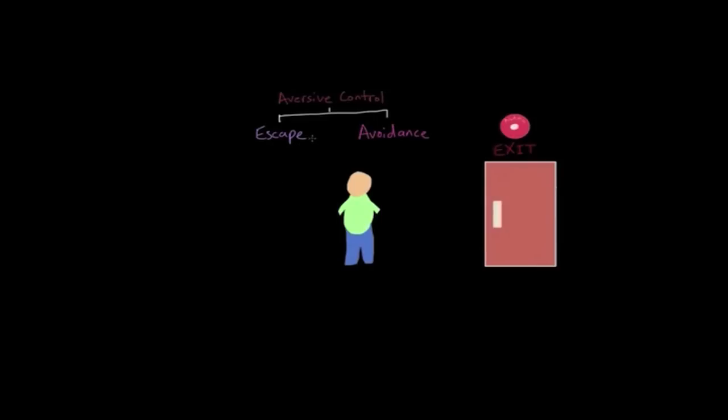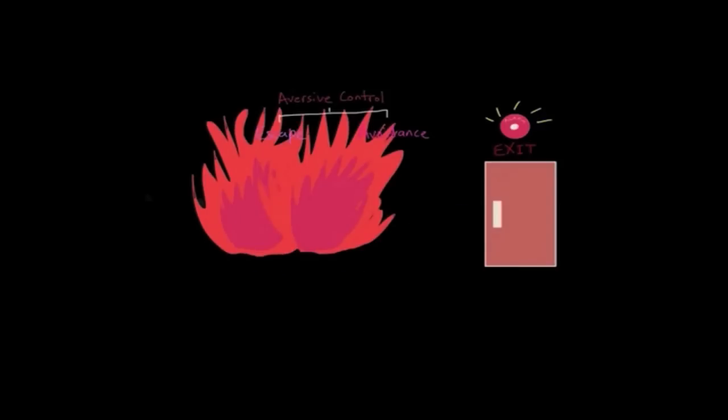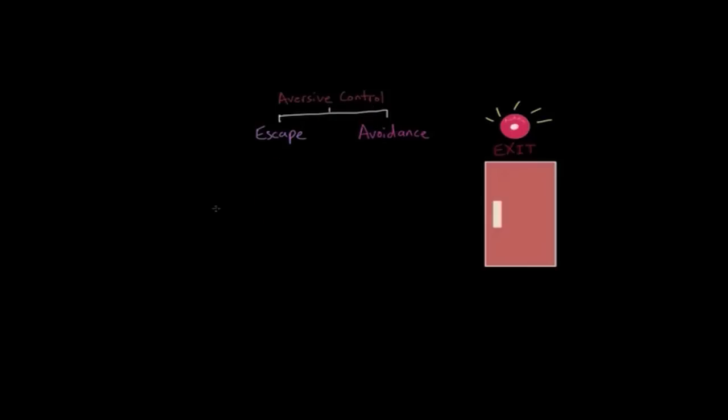Now escape learning can be converted into avoidance learning if some sort of signal is given before the aversive or unpleasant stimulus occurs. So using the fire example, for instance, if you were standing here listening to me talk and suddenly this fire alarm started ringing off, you would make your way to the exit door and be long gone before the fires broke out. Put another way, you're able to avoid the fire. So those are the two types of aversive control: escape and avoidance.